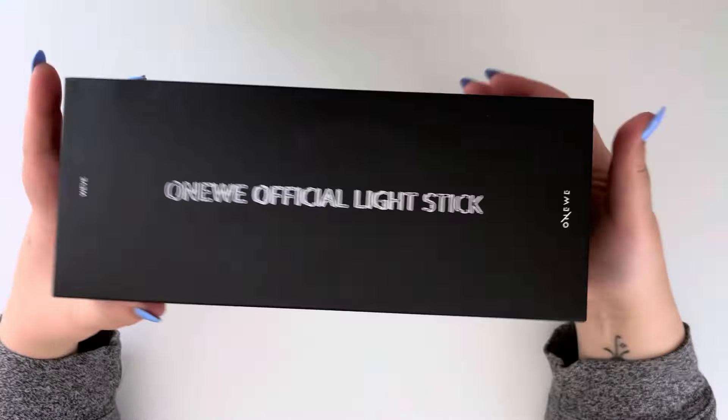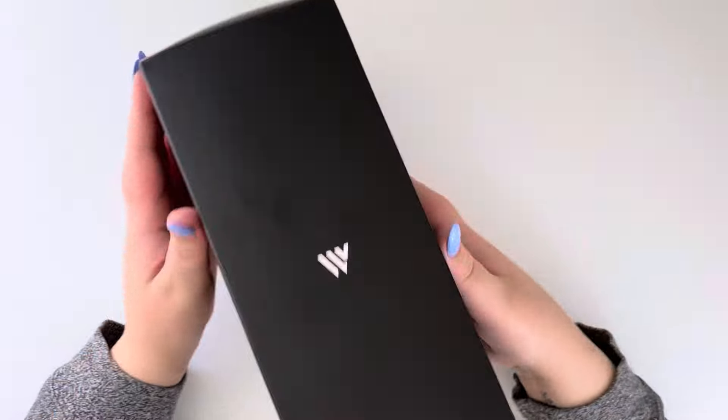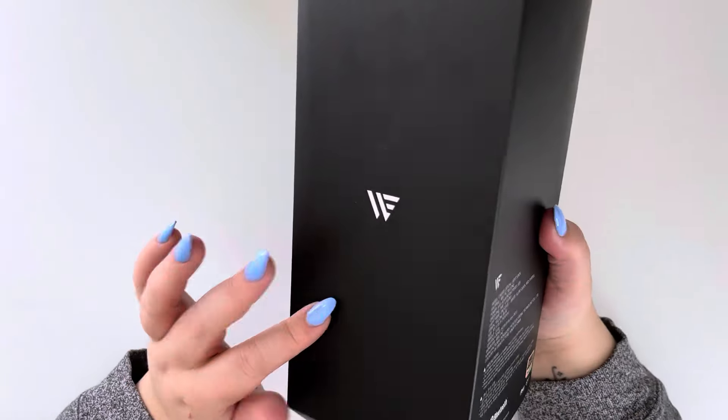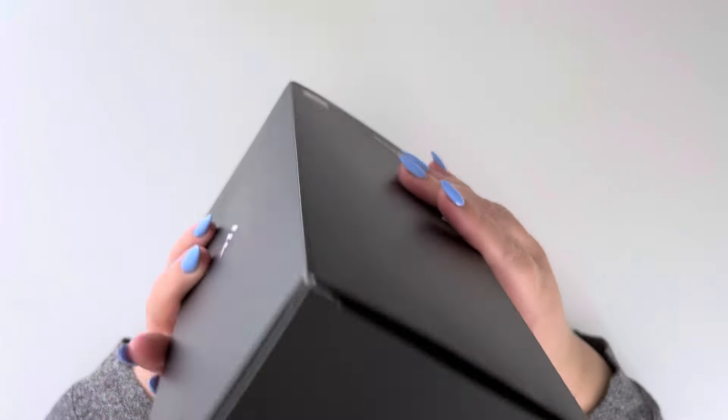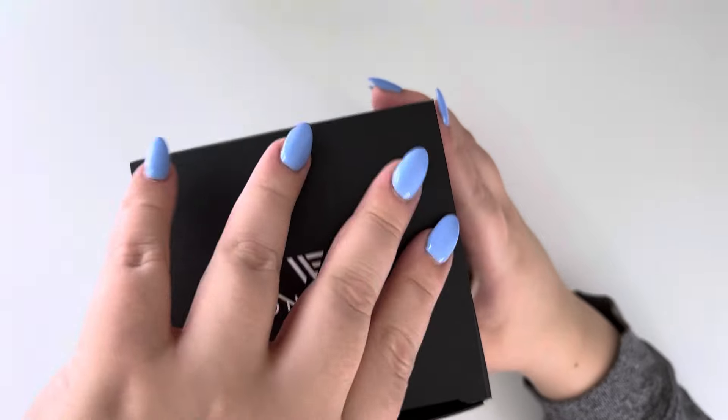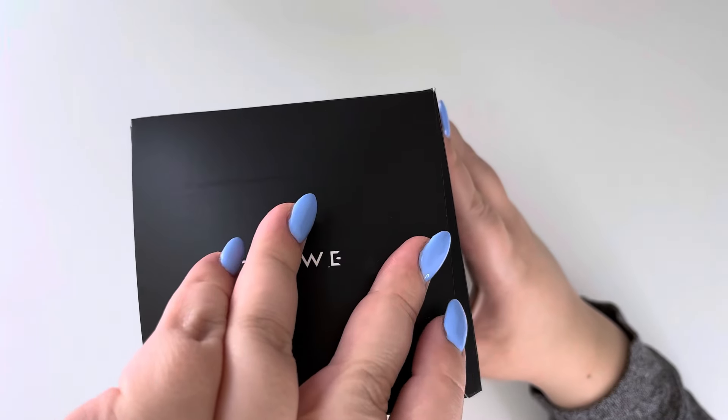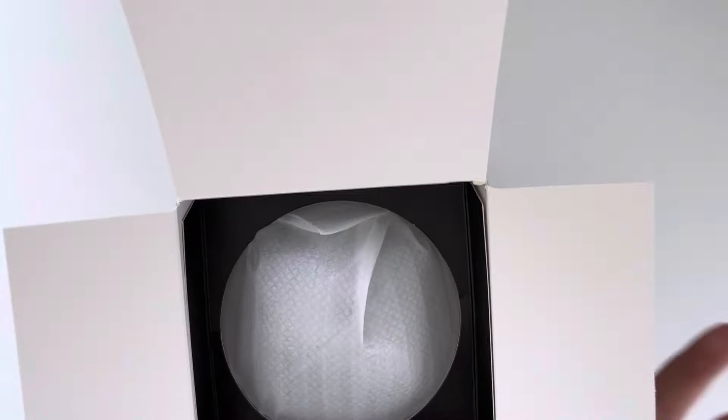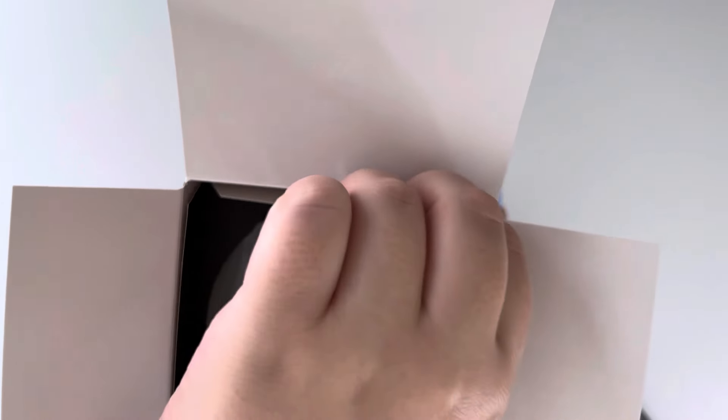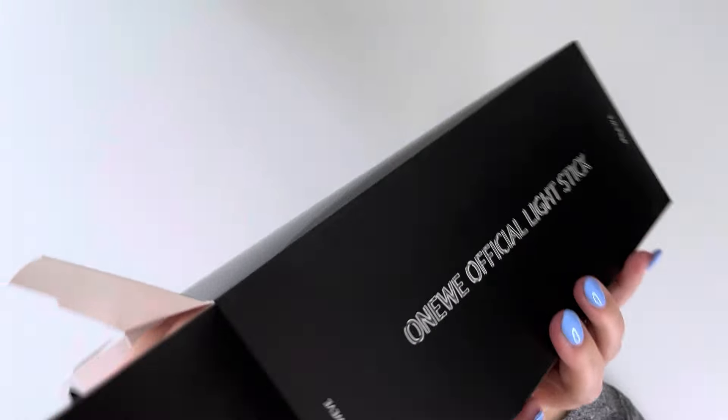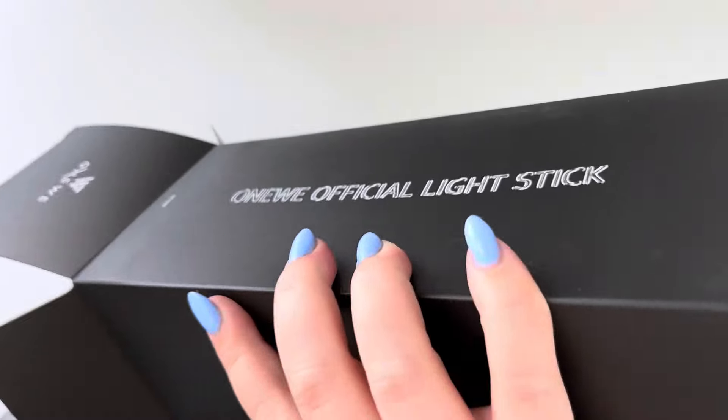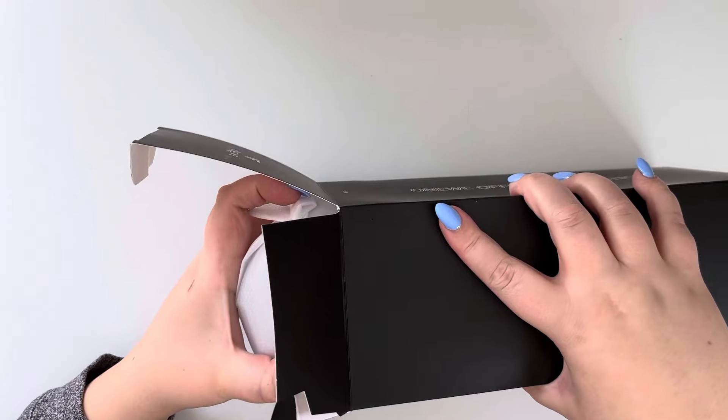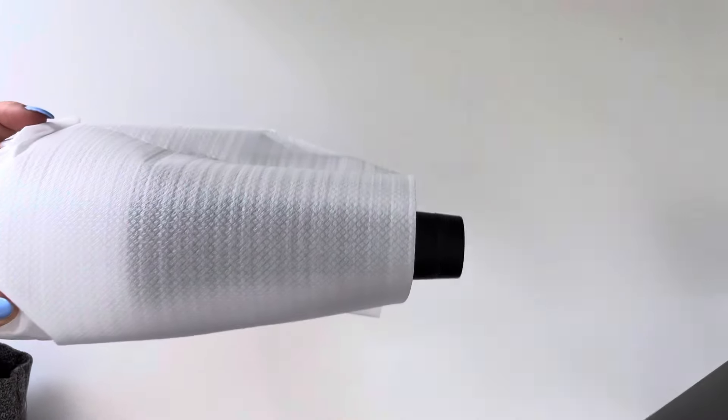So this is what the outer box looks like. I don't actually have a lot of light stick boxes that are black. I think BTS might be the only one that I have that's black like this. Oh my gosh, I'm really nervous. I'm always, always scared that light sticks are going to be broken, but let's see. Moment of truth. Oh my God, why can't I get it out?